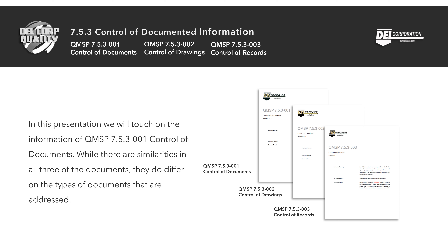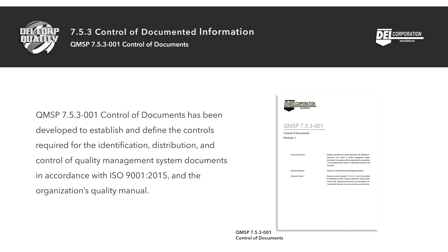While there are similarities in all three documents, they do differ on the types of documents addressed. QMSP 7.5.3-001 Control of Documents has been developed to establish and define the controls required for the identification, distribution, and control of quality management system documents in accordance with ISO 9001:2015 and the organization's quality manual.